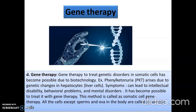Gene therapy happens in somatic cells due to biotechnology. Somatic cells are all the cells of the body except the reproductive cells. For example, the disease phenylketonuria arises due to genetic changes in the liver cell. Its symptoms can lead to intellectual disability, behavioral problems, and mental disorders. These diseases are very difficult to treat after birth. With the help of gene therapy, it is now possible to treat this disease — this method is called somatic cell gene therapy.